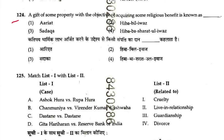Question 124: A gift of some property with the object of acquiring some religious benefit is known as Sadqa. Answer is 3. Ariyat is a right of easement — a gift where you can enjoy it during your lifetime.